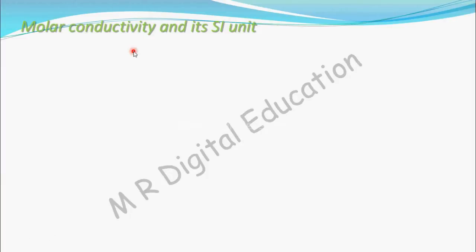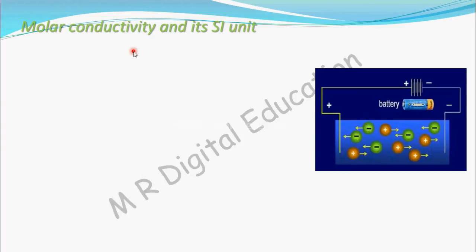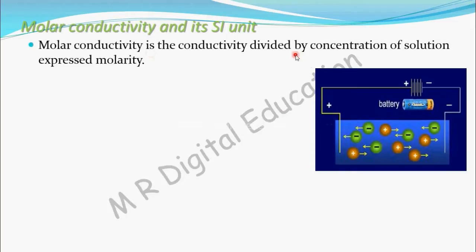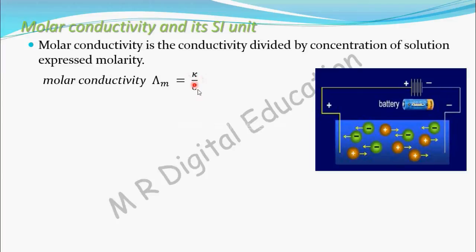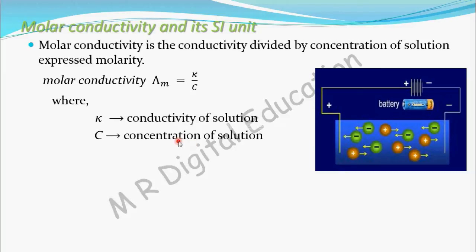Molar conductivity is nothing but conductivity divided by concentration expressed in molarity. Molar conductivity is denoted by lambda m, equal to kappa divided by concentration, where kappa is the conductivity of the solution and c is the concentration of the solution expressed in molarity.